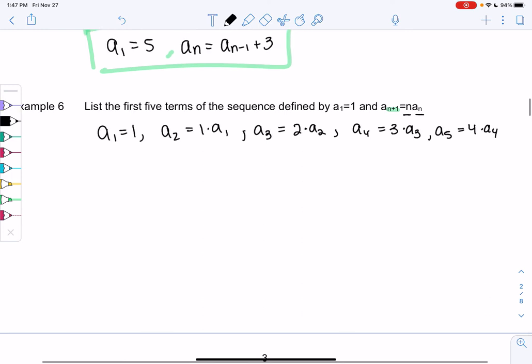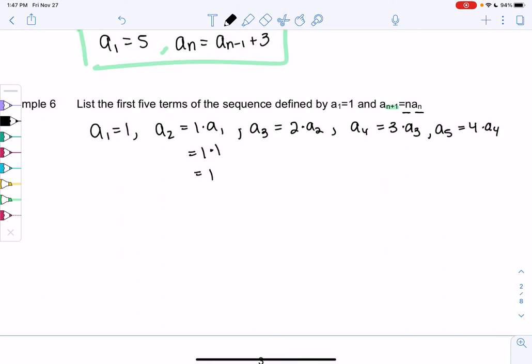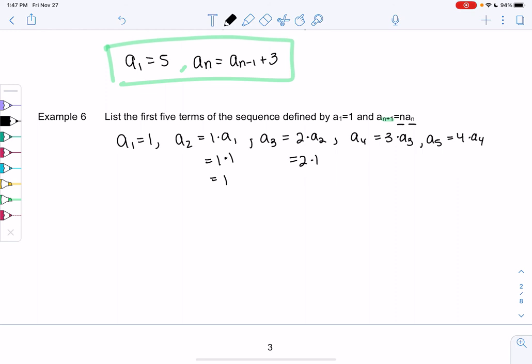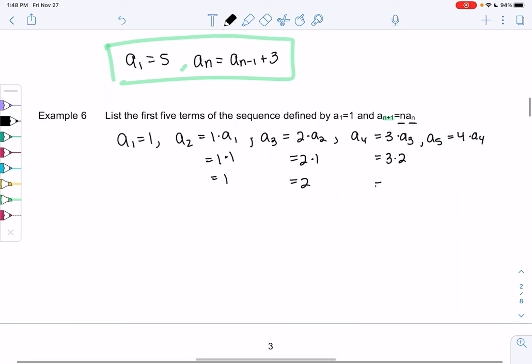So 1 times a_1 would just be 1 times 1, which is 1. So 2 times a_2 would be 2 times 1, which is 2. a_3 would be what? 3 times 2, or 6. And then a_5 would be 4 times, oops, that was 6, would be 4 times 6, or 4 times 3 times 2, or 4 times 6, or 24.